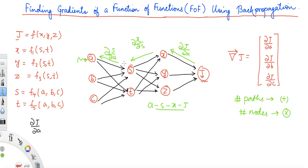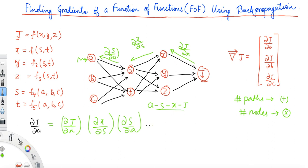When we backpropagate from S to A, we get ∂s/∂a and multiply it with the already accumulated product ∂x/∂s · ∂J/∂x. So in backpropagation we cumulatively multiply gradients as we encounter each node. Therefore, ∂J/∂a through path A→S→X→J equals ∂J/∂x · ∂x/∂s · ∂s/∂a. With four nodes there are three partial derivatives to be multiplied. This is ∂J/∂a corresponding to path one.